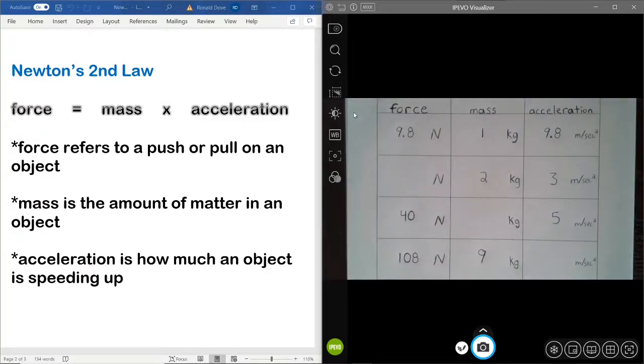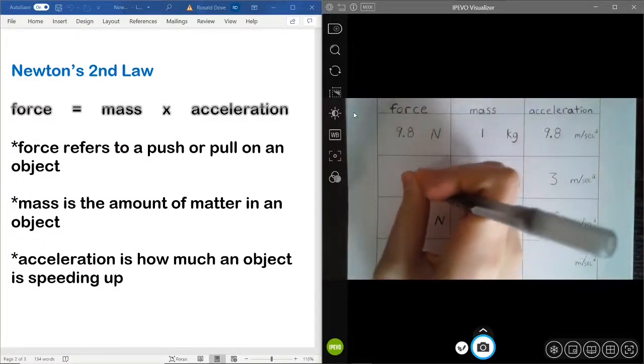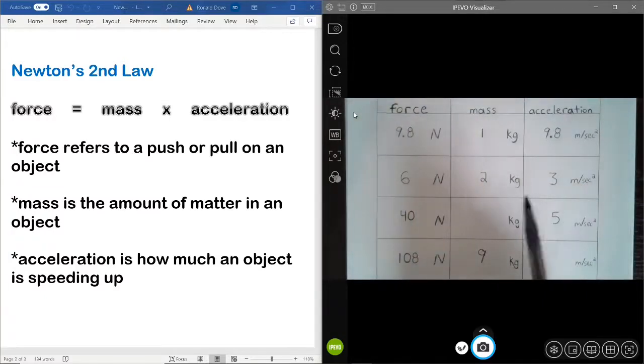Alright, now let's work on the rest together. So, if we had a mass of 2 kilograms for an object, an acceleration of 3 meters per second squared, then what would our force be? If force equals mass times acceleration. Hopefully, you realized that it would be 6 Newtons because 2 times 3 equals 6.